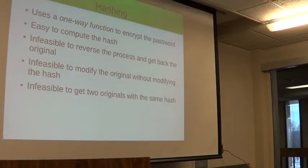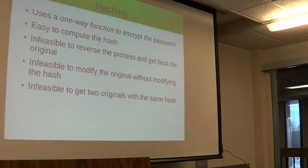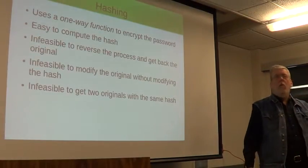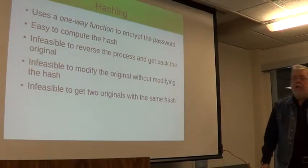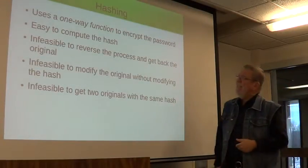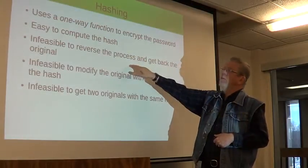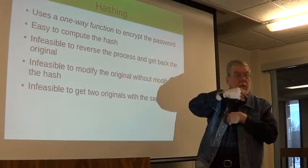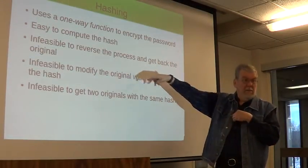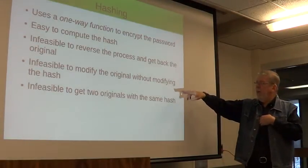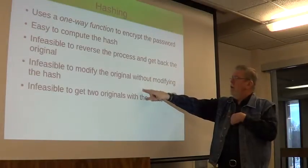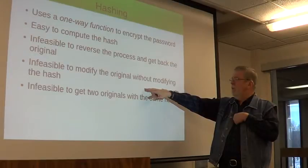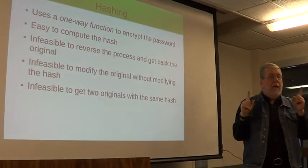Now, that was the worst case scenario. Let's assume we're doing a little bit better here — we're employing hashing. Hashing is an example of what's called a one-way function in mathematics. One-way functions are very easy to compute but infeasible to reverse. A brute force attack is essentially reversing this. Also, it should be infeasible to modify the original without modifying the hash.